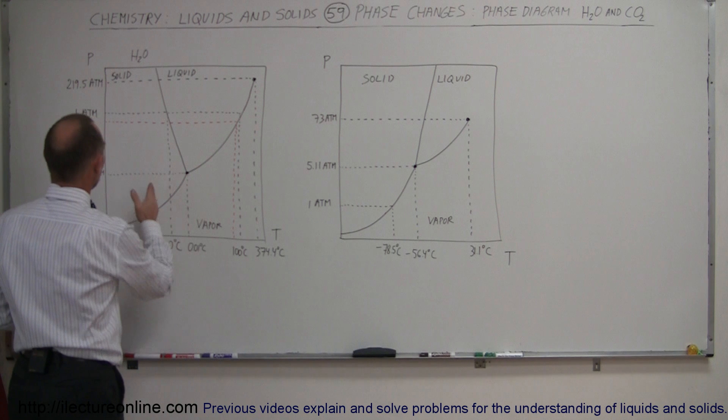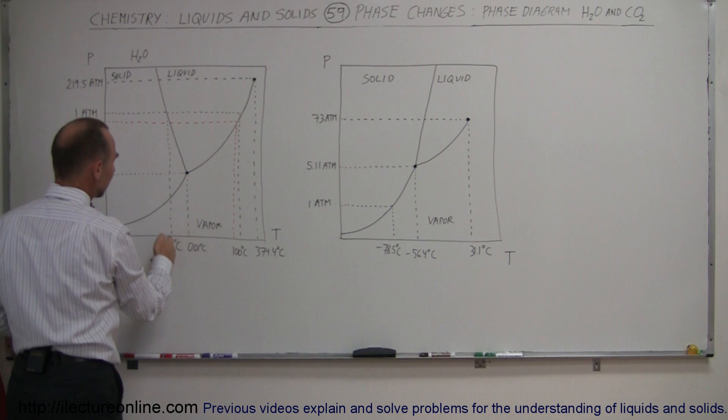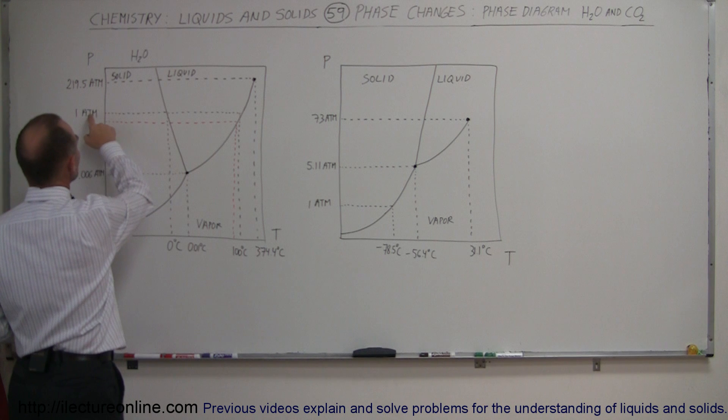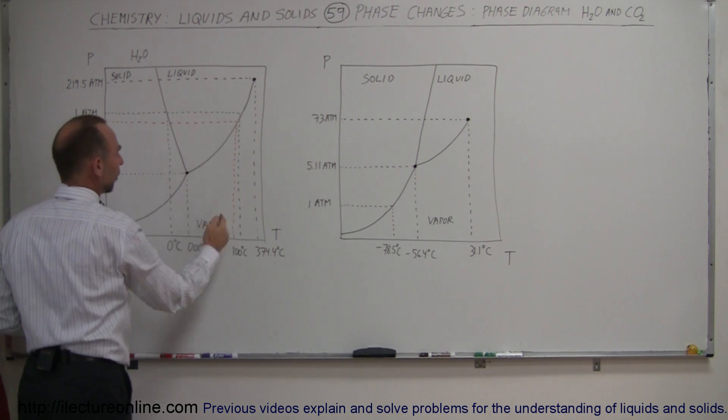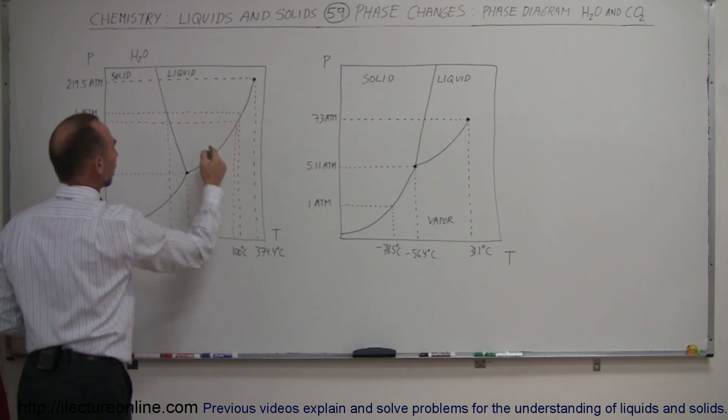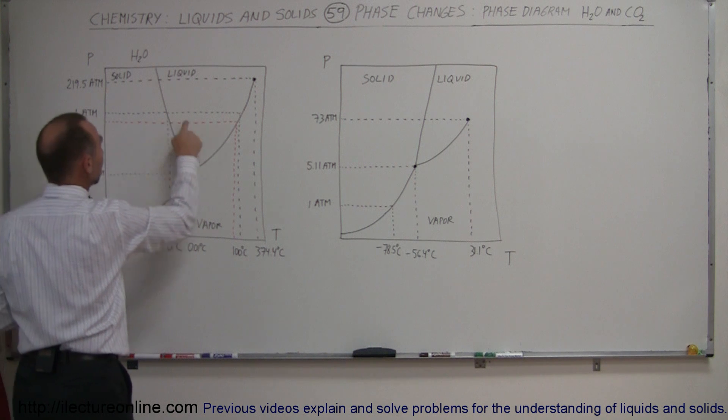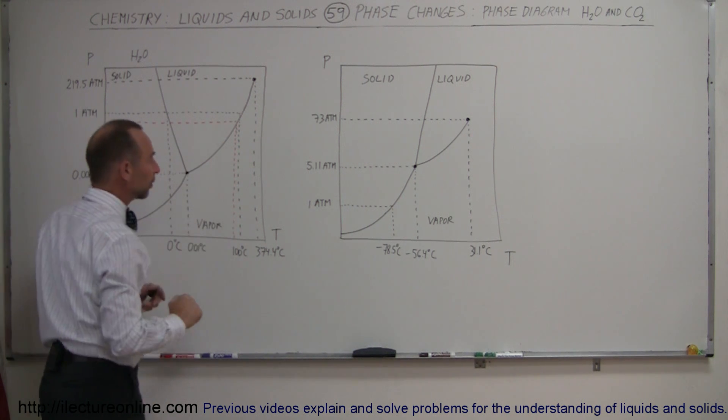Also, you can see that at one atmosphere, which is atmospheric pressure on the Earth, water will freeze or melt, depending upon which way you go, left to right or right to left, at 0 degrees centigrade. Also, at one atmosphere, you have a phase change between vapor and liquid, so that's when water begins to boil. What happens when the atmospheric pressure drops, like when you go to higher elevations? Well, when the atmospheric pressure drops, that means the water will boil at a lower temperature, below 100 degrees centigrade.